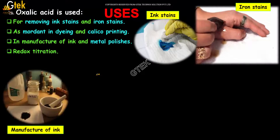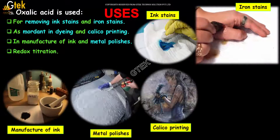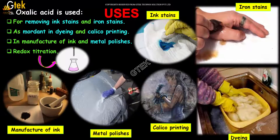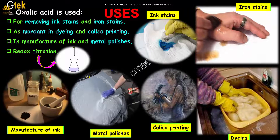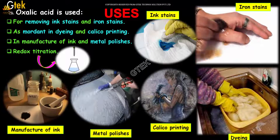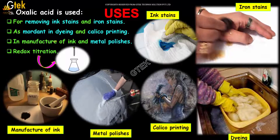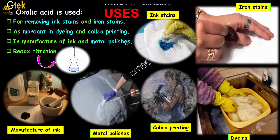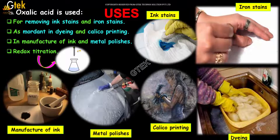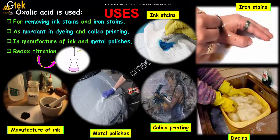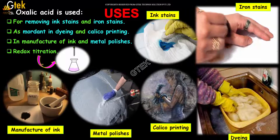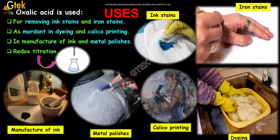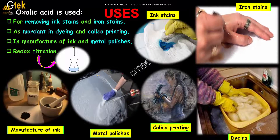Oxalic acid is used for removing ink stains and iron stains, and it is also used as a mordant in dyeing and calico printing. It is used in the manufacture of ink and metal polishes, and also used for redox titrations.